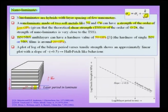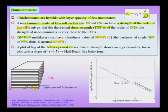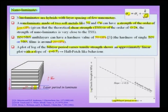The important point is that not only do we get this hardening effect, but if we study hardening as a function of bilayer period — keeping individual layer thicknesses equal and varying the overall periodicity — then plotting log of the bilayer period versus tensile strength or hardness, we find an approximately linear relationship with a slope of about minus 0.5. This is like a Hall-Petch behavior.